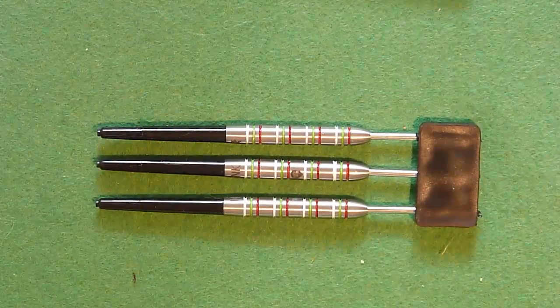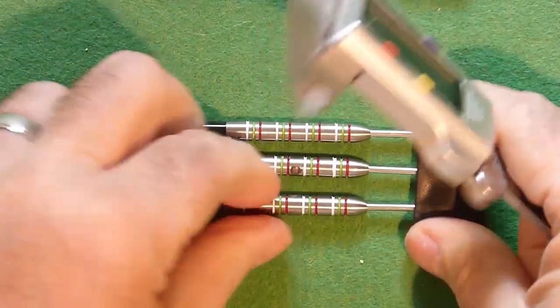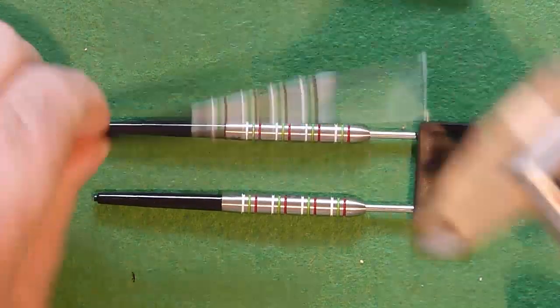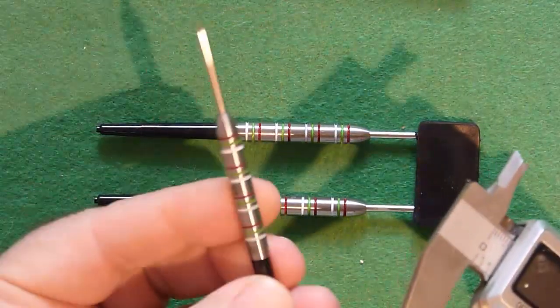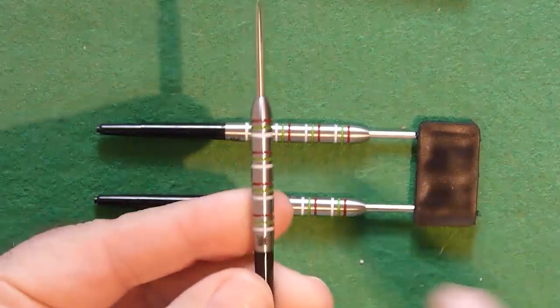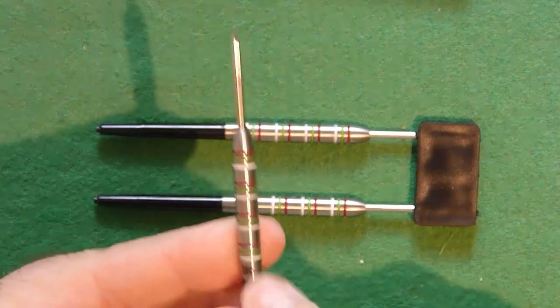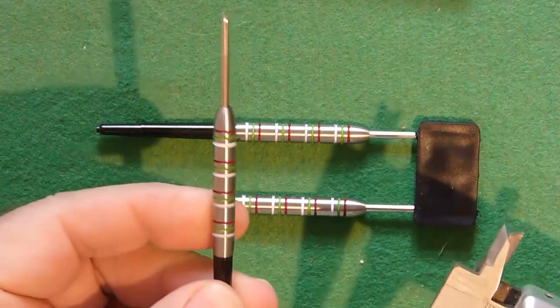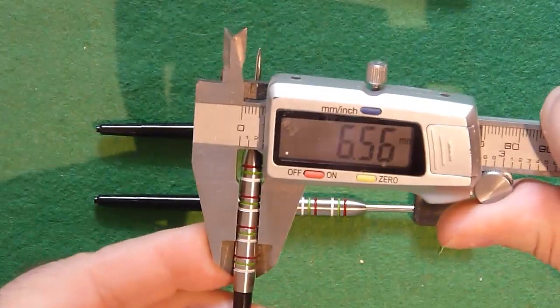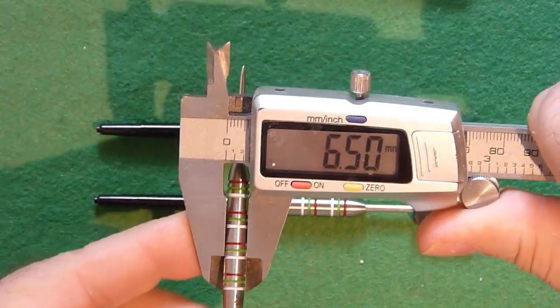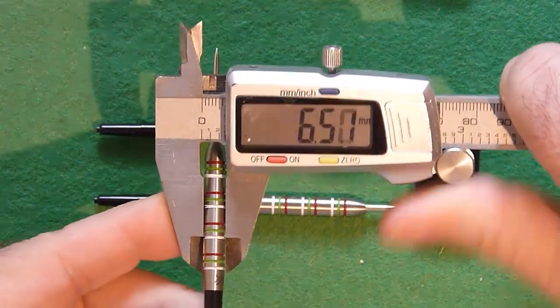Let's have a quick physical measure of one of these darts. Thickness wise it's a traditional standard shape with a taper each end and then it's parallel along the centre part and that is 6.5 millimetres. Bang on!